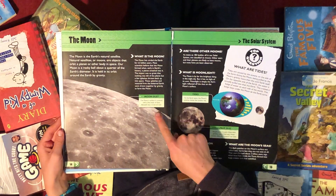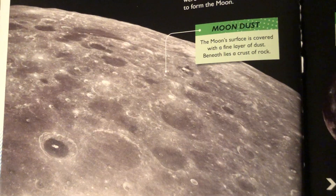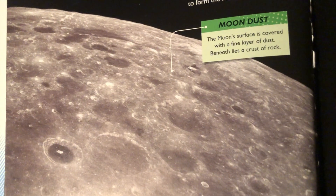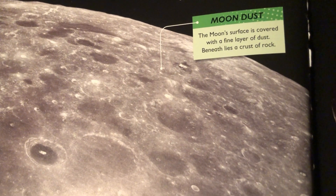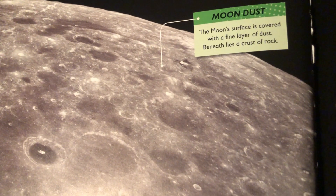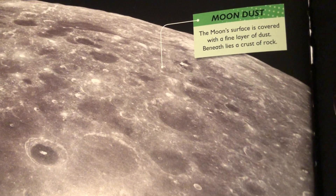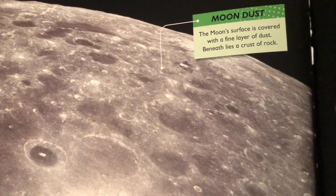Moon dust. The Moon's surface is covered with a fine layer of dust. Beneath lies a crust of rock.